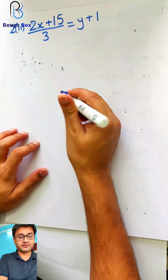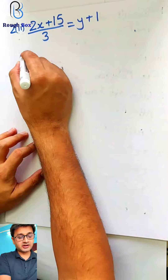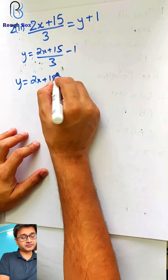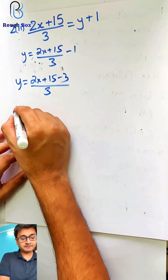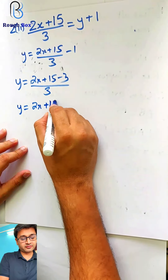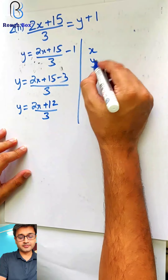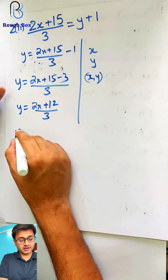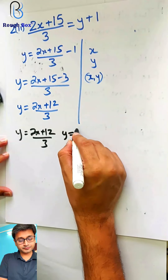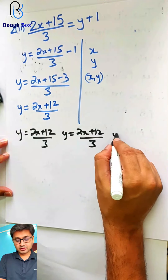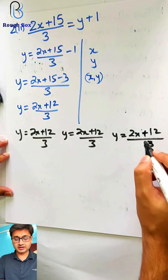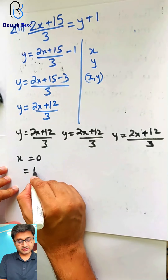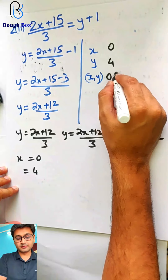Let's first get this on the graph sheet, so 3 points for that. Making y as the subject: y equals 2x plus 15 upon 3 minus 1, which gives y equals (2x plus 15 minus 3) upon 3. So y equals (2x plus 12) upon 3. The table: x, y, x comma y. Assuming x as 0: 2 into 0 is 0, and 12 by 3 gives 4. So x is 0, y becomes 4 — that's my first point.